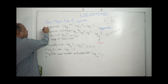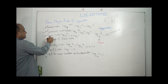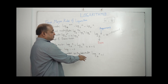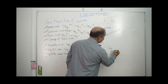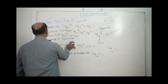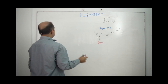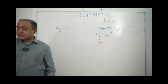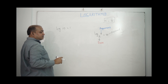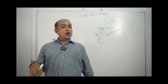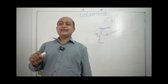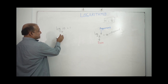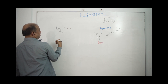The rules are: product rule, ratio rule, power rule, change of base rule, equality rule, log of 1 rule, and log of same number as base rule. Log base a of a equals 1. For example, log base 2 of 2 equals 1. When we write log 10, log 10 equals 1.